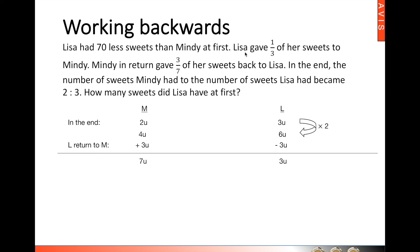The previous action says that Lisa gave 1/3 of her sweets to Mindy. That means Lisa would have left 2/3 of her sweets. So, we have to make use of lowest common multiple again to make Lisa have 6 units. We multiply by 2 to make Lisa 6 units.